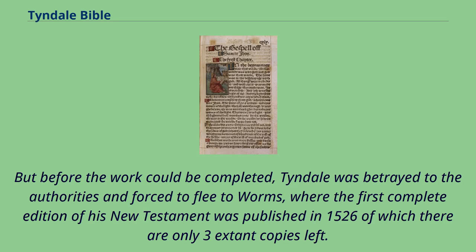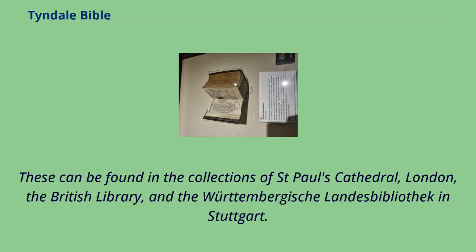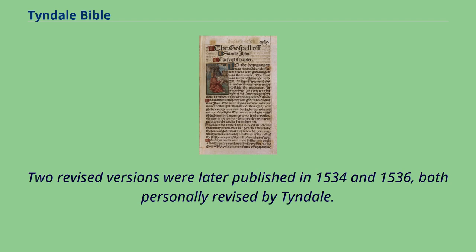But before the work could be completed, Tyndale was betrayed to the authorities and forced to flee to Worms, where the first complete edition of his New Testament was published in 1526, of which there are only three extant copies left. These can be found in the collections of St. Paul's Cathedral, London, the British Library, and the Württembergische Landesbibliothek in Stuttgart. Two revised versions were later published in 1534 and 1536, both personally revised by Tyndale.